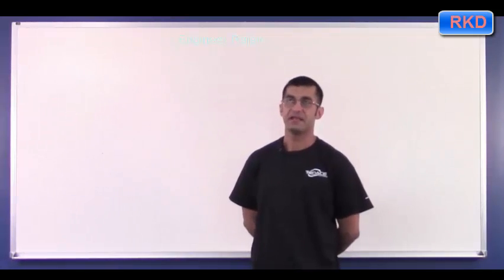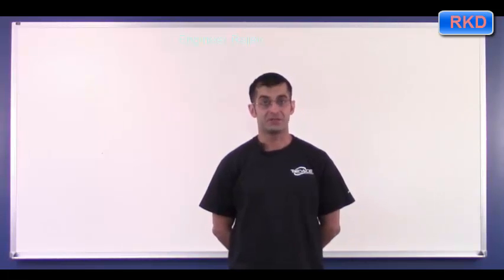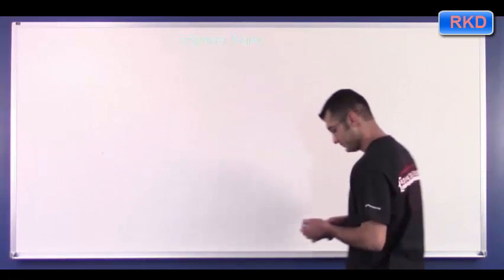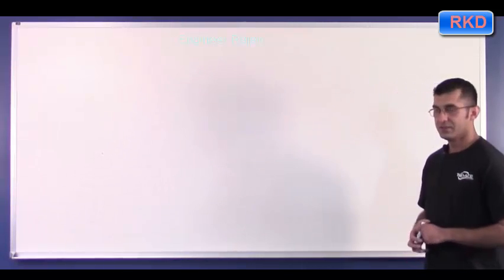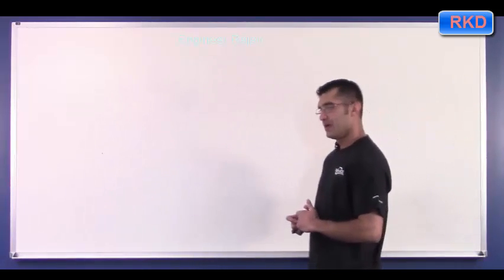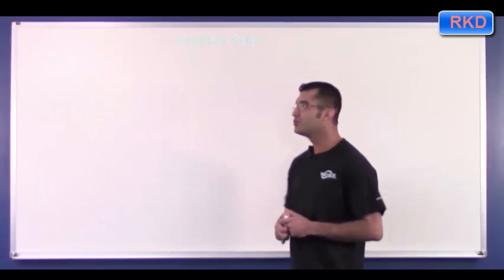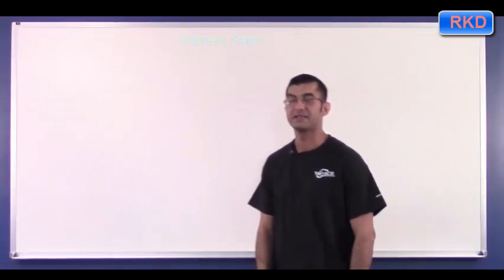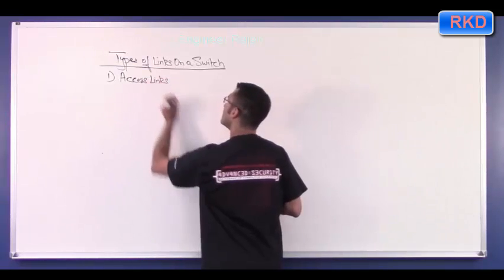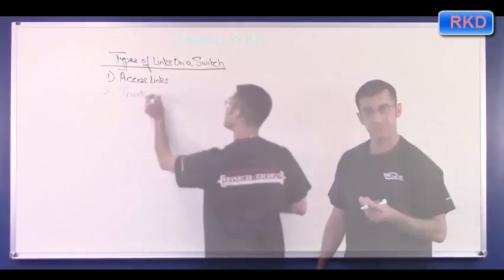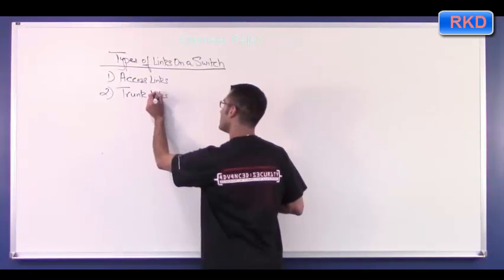So the answer to what a VLAN is should be that a VLAN is a layer two broadcast domain. Now, there are two types of links that can exist on a switch, and the word link is synonymous with the word port. So there are two types of ports or links that can exist on a switch. The first one is your access links, or your access ports, and the second one is your trunk links.